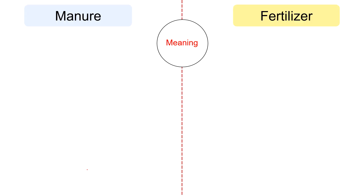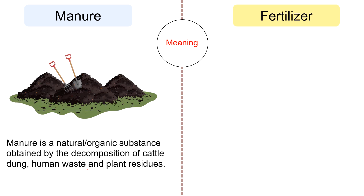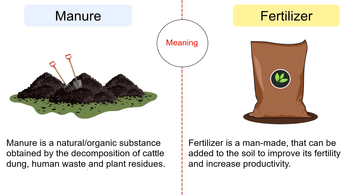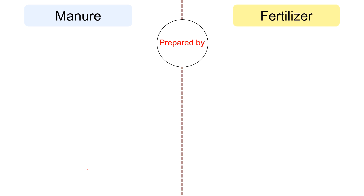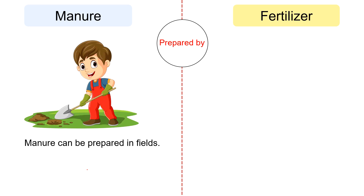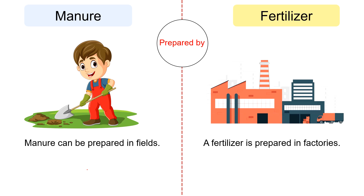Moving on to the differences between manure and fertilizer. In terms of meaning, manure is a natural or organic substance obtained by the decomposition of cattle dung, human waste and plant residues. On the other hand, fertilizer is a human-made substance that can be added to the soil to improve its fertility and increase productivity. Regarding how each is prepared, manure is prepared in fields by dumping animal and plant waste in open pits to decompose it, whereas fertilizers are produced in factories through a chemical procedure.